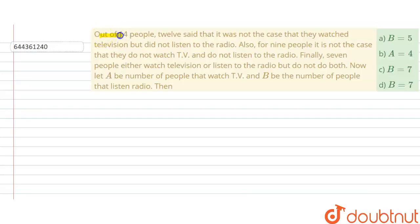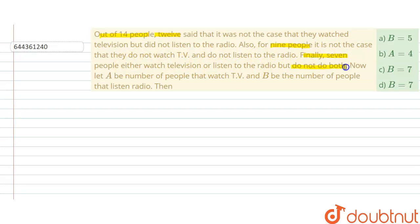Hello students. The problem is: out of 14 people, 12 said that it was not the case that they watch television but did not listen to the radio. Also, for 9 people, it is not the case that they do not watch television and do not listen to the radio. Finally, 7 people either watch television or listen to the radio but do not do both. Let A be the number of people that watch television and B be the number of people that listen to the radio. Which of the following options is correct?